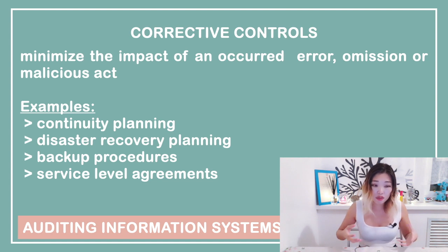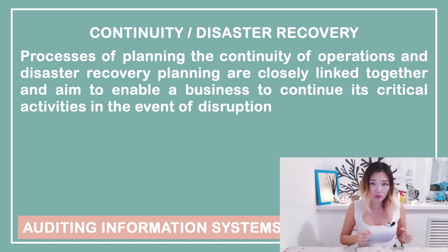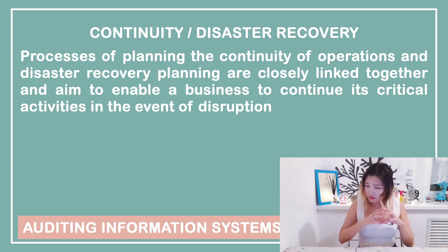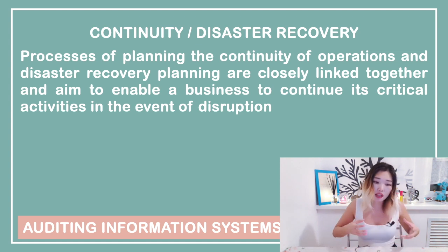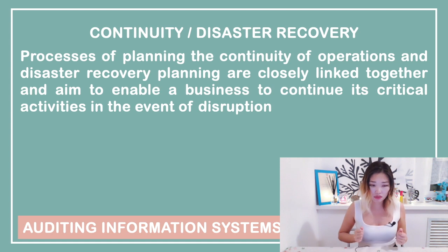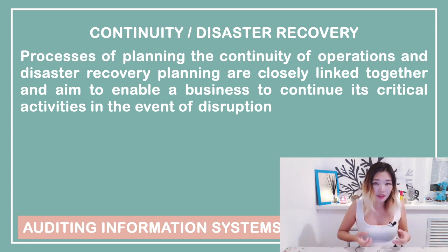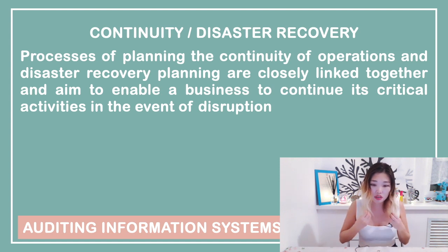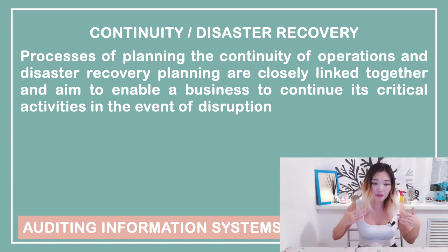The processes of business continuity planning (BCP) and disaster recovery planning (DRP) are a set of activities we will learn about in future videos. Basically, they help companies manage risk in the event of a disaster or disruption of services. For example, if there is a power outage in a company's office building, BCP and DRP are activated to minimize the impact on critical business activities and help manage risks while the company is recovering.